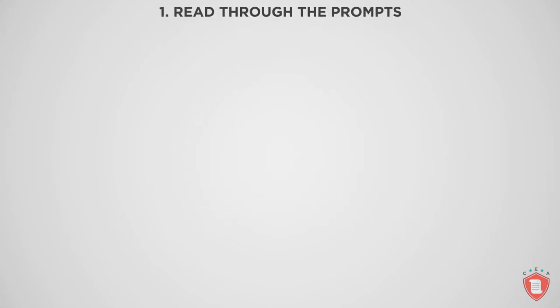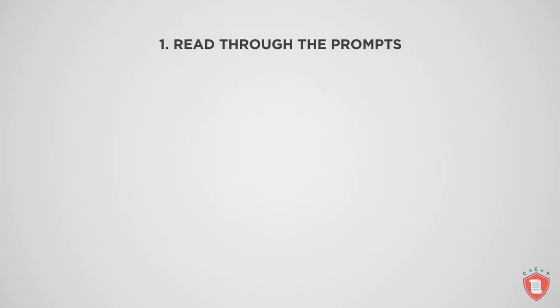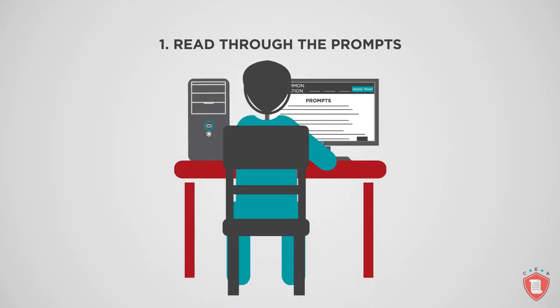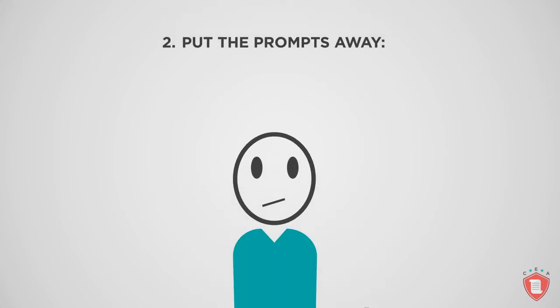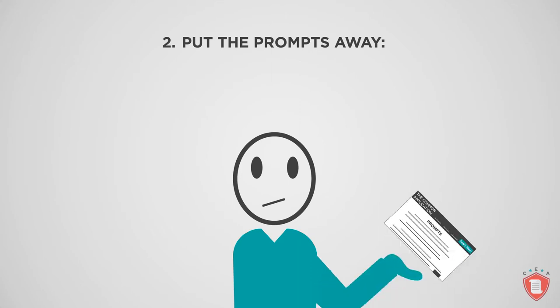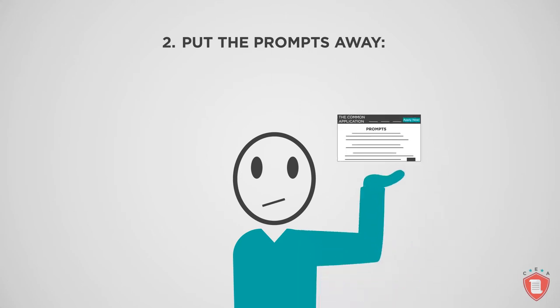The backwards brainstorm consists of four simple steps. Step one: read through the prompts. Once you've dissected your options one by one, you know what you're up against. Step two: put the prompts away. You now know that, at least for the time being, the specifics of the prompts don't really matter.